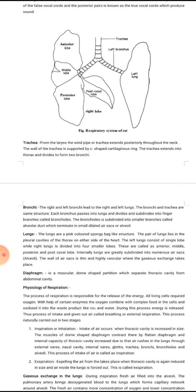The pair of lungs lies in the pleural cavity of the thorax on either side of the heart. The left lung consists of a single lobe, while the right lung is divided into four smaller lobes called anterior, middle, posterior, and postcaval lobe.